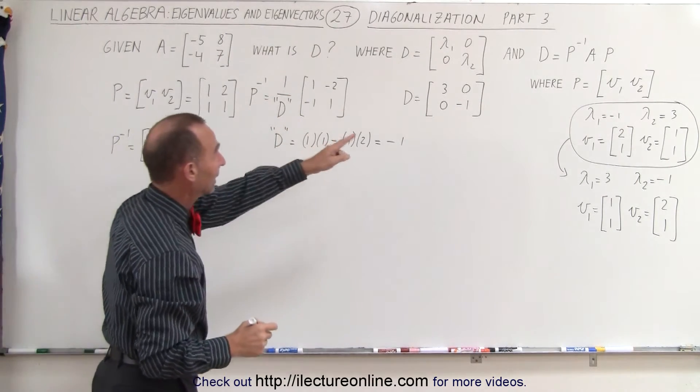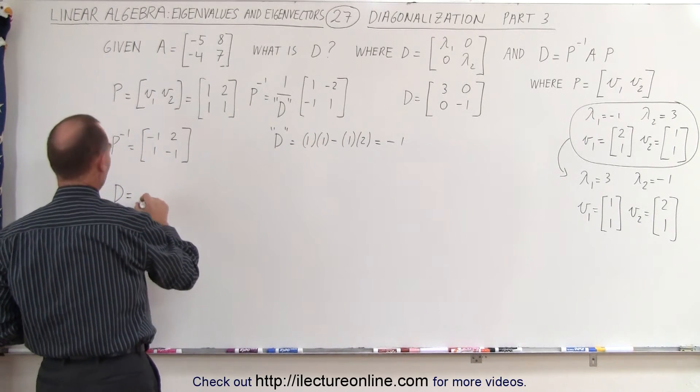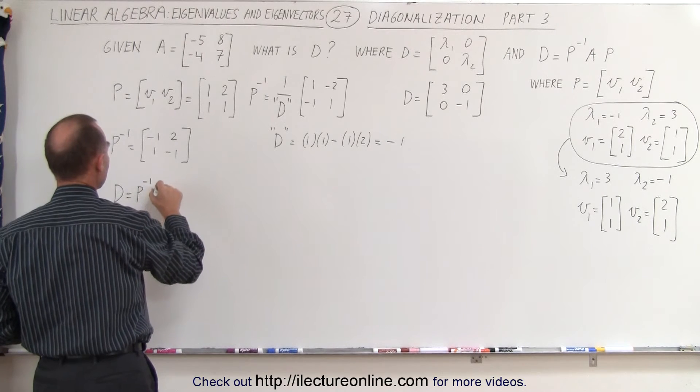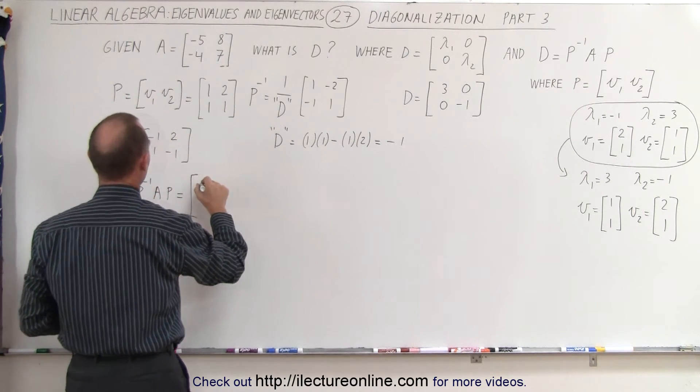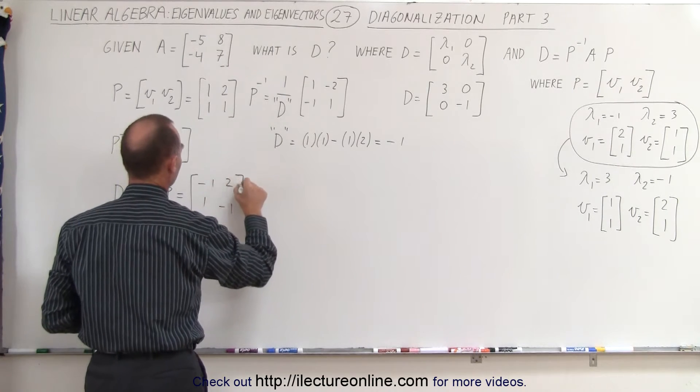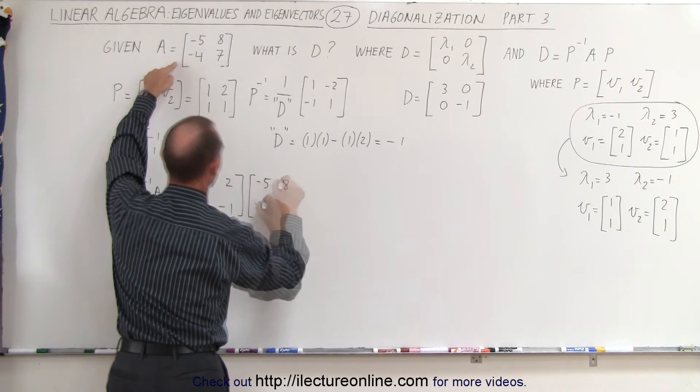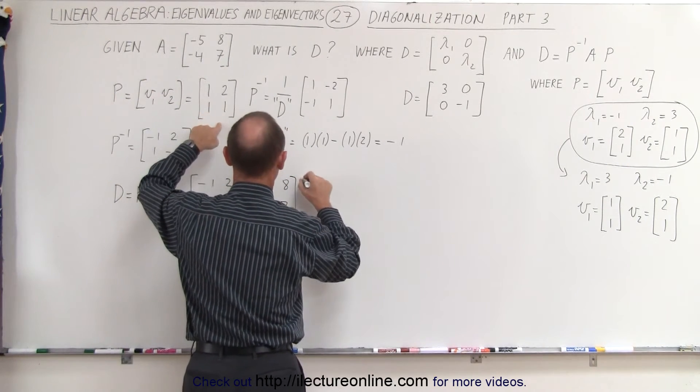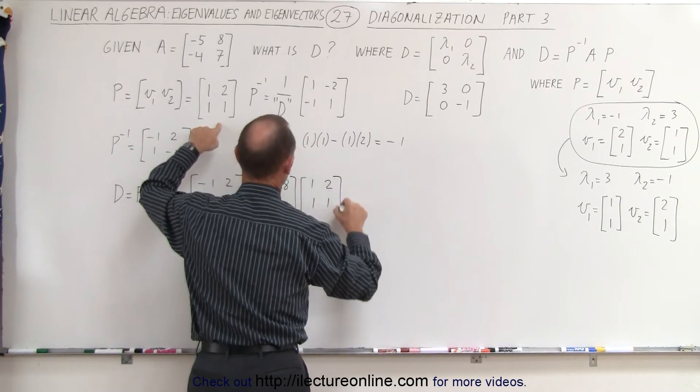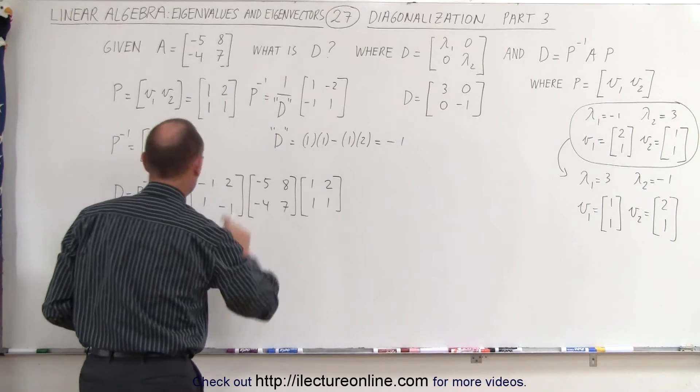Now we can go ahead and calculate diagonalized matrix D, which is equal to the inverse of P times A times P, which is going to be minus 1, minus 1, 2, 1. The A matrix is negative 5, negative 4, negative 4, 7. And then the P matrix, which is right here, 1, 2, 1, 1. All right, now let's go ahead and work that out and see if we get the same result.